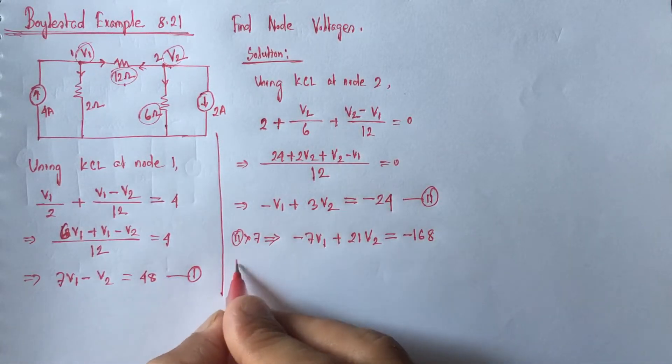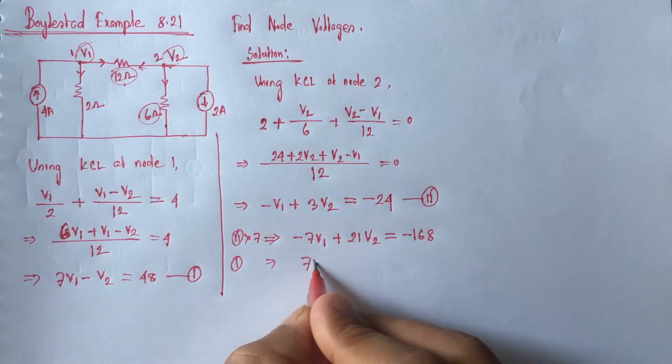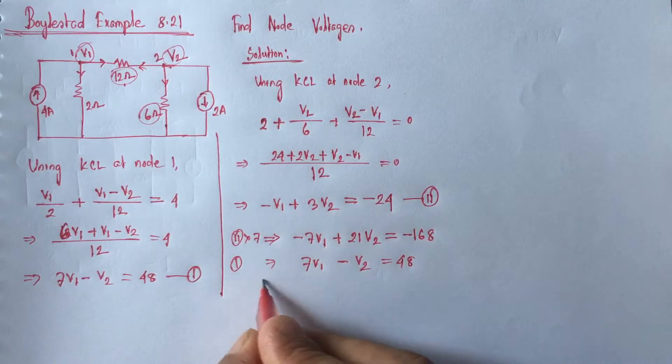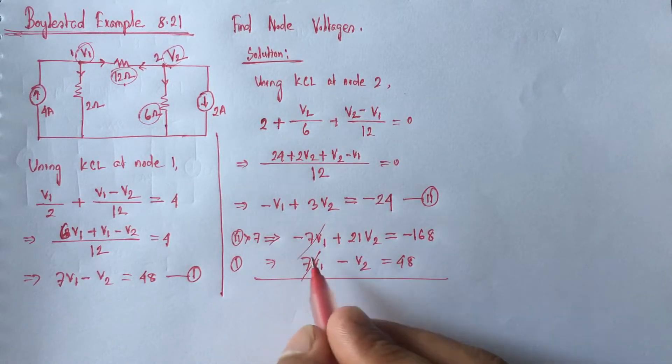So, equation 1, if we put equation 1 here, 7V1 minus V2 equals 48. Solving, 7V1 will cancel each other.